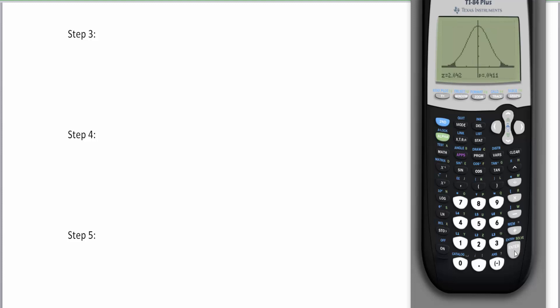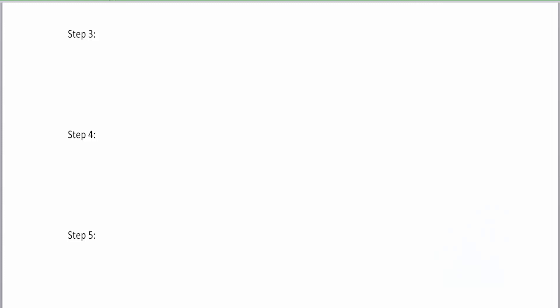All right. Beautiful two tail. Beautiful two tail Z curve. You can put that here. We can draw this in step four before we do step three. And our Z score was 2.042. And my P score was 0.0411.